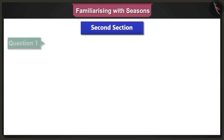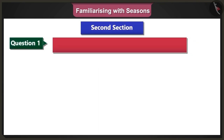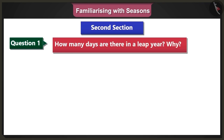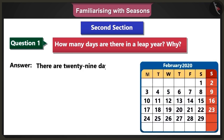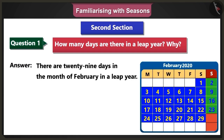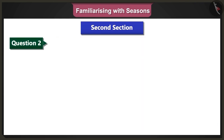First question of the second section: How many days are there in a leap year and why? Answer: There are 29 days in the month of February in a leap year. Hence, there are 366 days in this year.